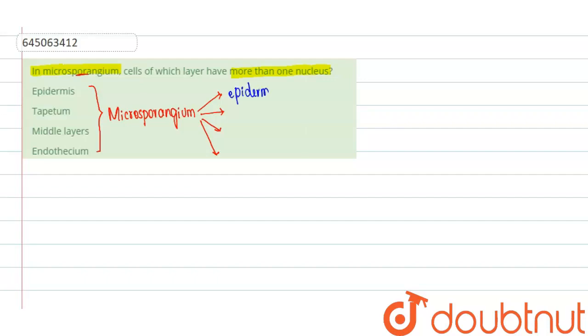Let us see them in series. The first wall layer is the outer epidermis. This epidermis consists of single layer of cells and those cells will be uninucleated.